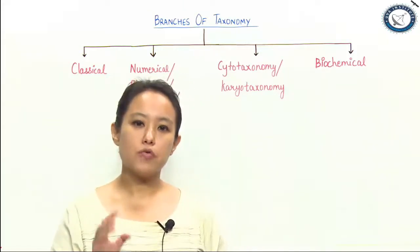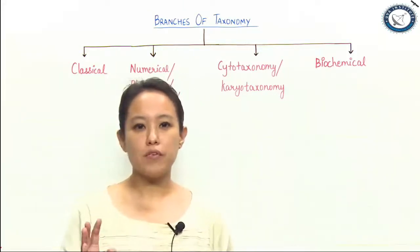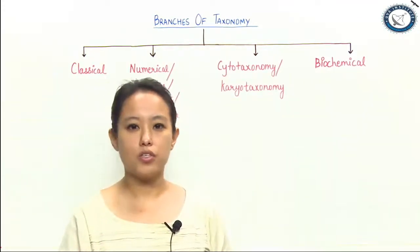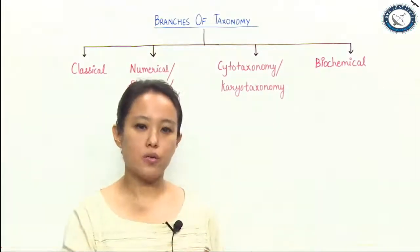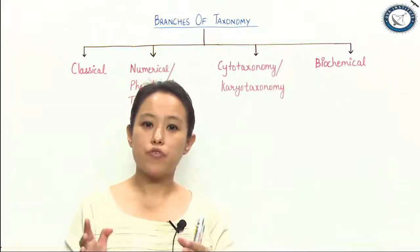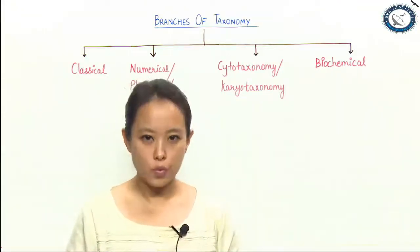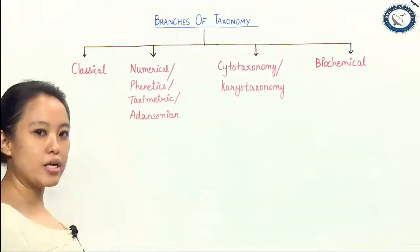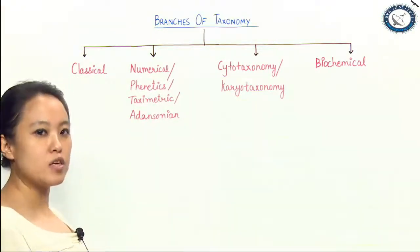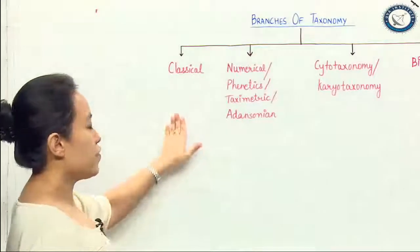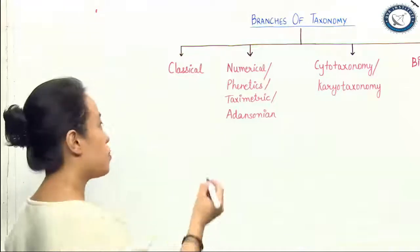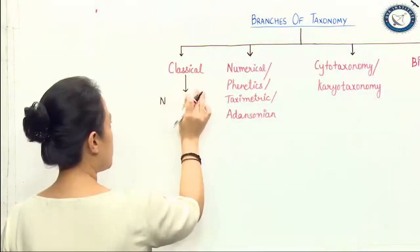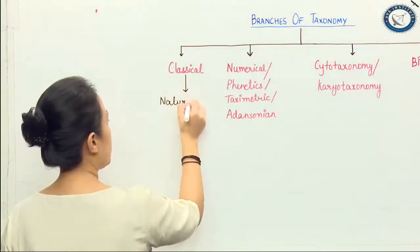So let us start with the branches of taxonomy. First you need to know that on the basis of all the embryological evidences, number of chromosomes, chemical approach — everything we dealt with in the last chapter — these have been professionally divided into certain branches. The first branch is classical taxonomy. When organisms are classified on the basis of natural affinities, that is classical taxonomy.